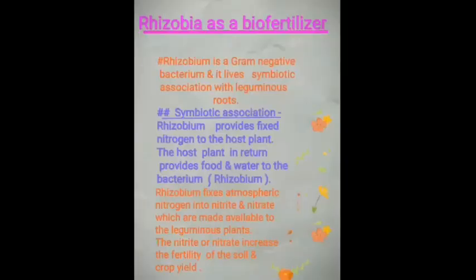Rhizobia as a bio-fertilizer: Rhizobium is a gram-negative bacterium that lives in symbiotic association with leguminous roots. Rhizobium provides fixed nitrogen to the host plant, while the host plant in return provides food and water to the rhizobium. Rhizobium fixes atmospheric nitrogen into nitrite and nitrate, which are made available to the leguminous plants, increasing the fertility of the soil and crop yield.